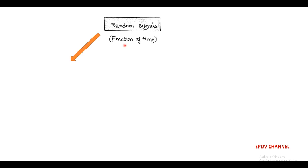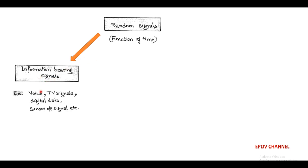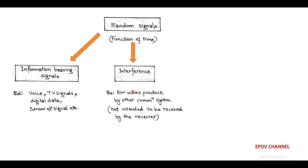First, the random signal is information-bearing signals such as voice, TV signal, digital data, sensor output signals, etc. Secondly, during transmission, there is a possibility of interference by another electromagnetic wave which is not intended to be received by the receiver.